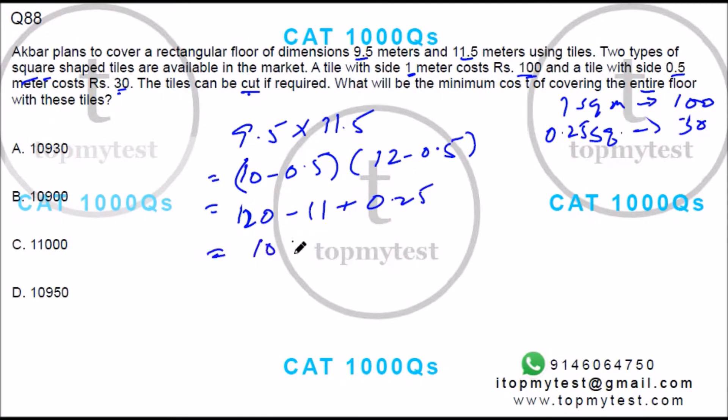Right, this is the total square meters. Now this 109 can be filled using this, so that will be 10,900. Now for this 0.25, if I purchase this I would have purchased the full tile and then cut it. Instead of that, only for this 0.25 I can use the smaller tiles.